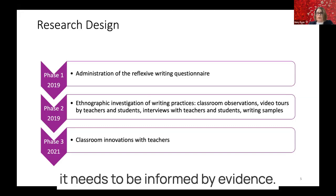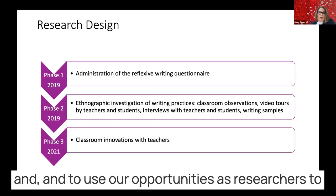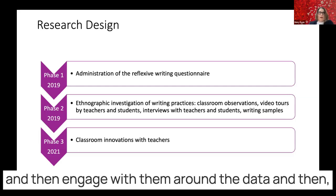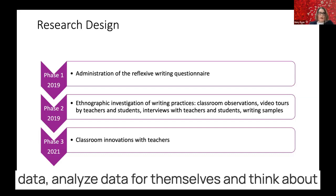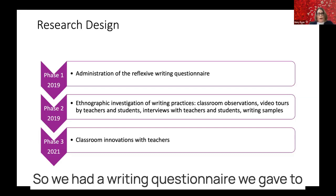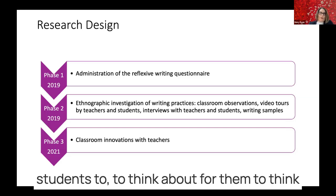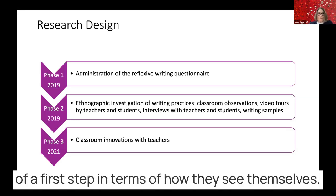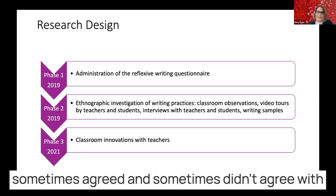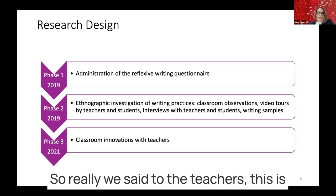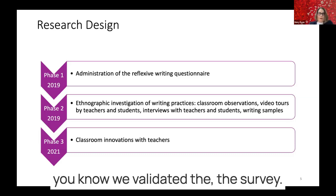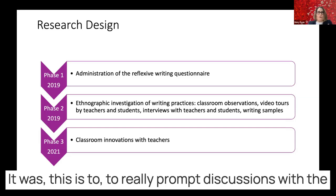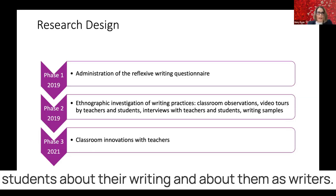Professional learning needs to be timely, relevant, related to what teachers are doing now, ongoing, iterative, and informed by evidence. We really tried to take those things into account and use our opportunities as researchers to collect data that would be useful for teachers, then engage with them around the data and move forward as they generate and analyze data for themselves. We had a writing questionnaire for students to think about what kind of writers they were and how they make decisions when they write. This was a first step in how they see themselves, and we shared that with teachers, who sometimes agreed and sometimes didn't with how the students thought they operated as writers.